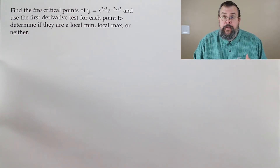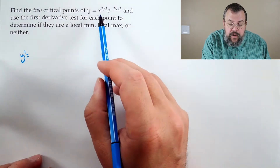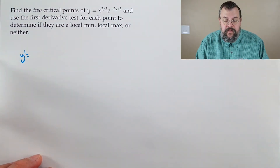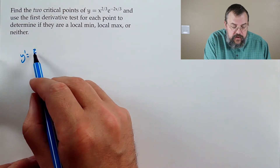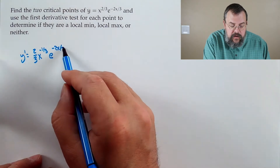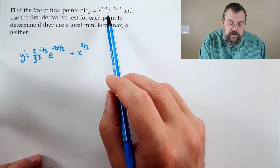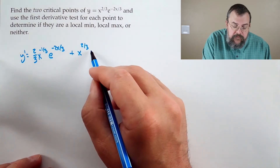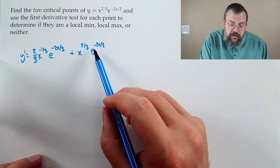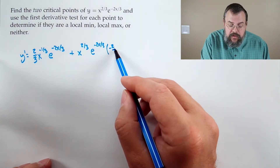We have a product of two functions — x to the 2/3 and e to the minus 2x over 3 — so we use the product rule. Take the derivative of the first: 2/3 times x to the minus 1/3, leave the second alone; then add the first, x to the 2/3, times the derivative of the second. The derivative of e to the minus 2x/3 is e to the minus 2x/3 times the derivative of the inside, which is negative 2/3.